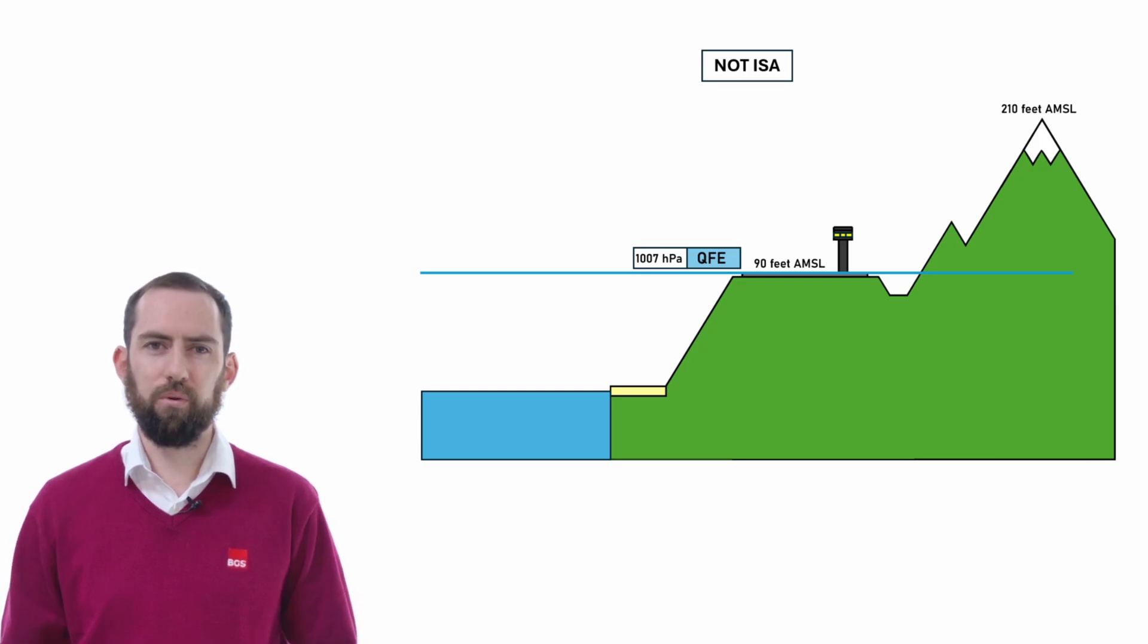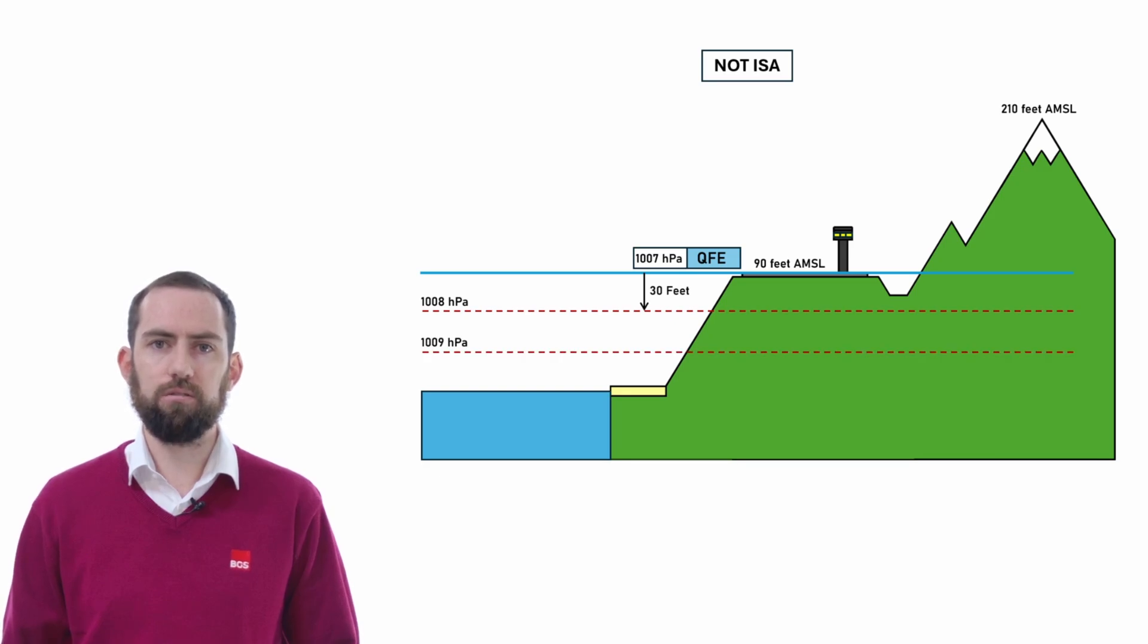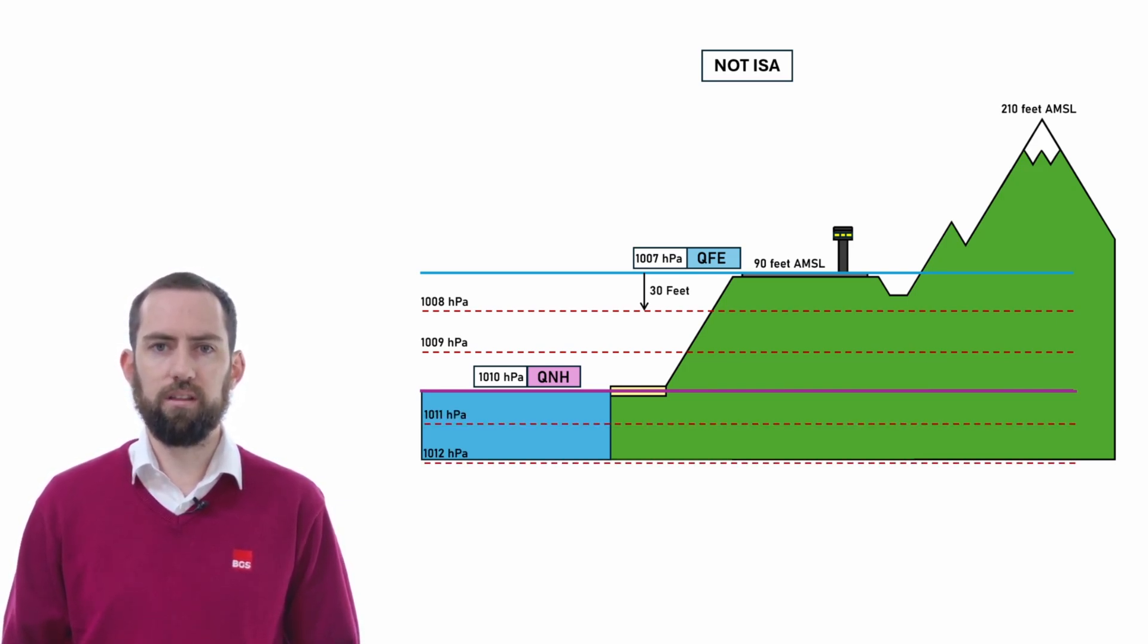Let's bring the 1007 hectopascal pressure plane downwards to our airfield elevation. This becomes our new QFE. Let's rebuild the rest of our atmosphere. If we count down 30 feet, we get to our next pressure plane, which will be 1008. And if we continue that on, we eventually get to our QNH, which is now 1010, which is what our QFE previously was. So our pressure planes have effectively shifted 90 feet downwards. I'm going to continue downwards from there. Notice where the 1013 level is now.